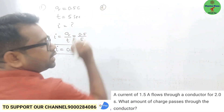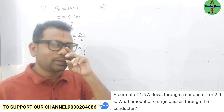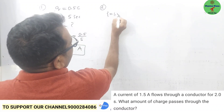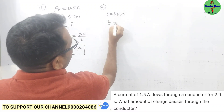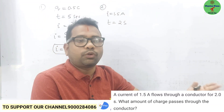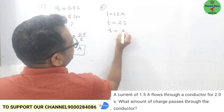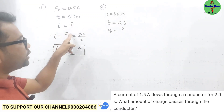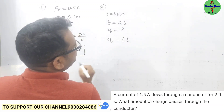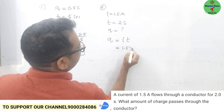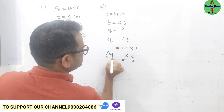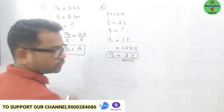Second numerical: a current of 1.5 ampere is flowing for a time of 2 seconds. They are asking how much charge should flow. We use the same formula I = Q/T, but rearranged: Q is equal to I into T. So Q = 1.5 × 2 = 3 coulombs.